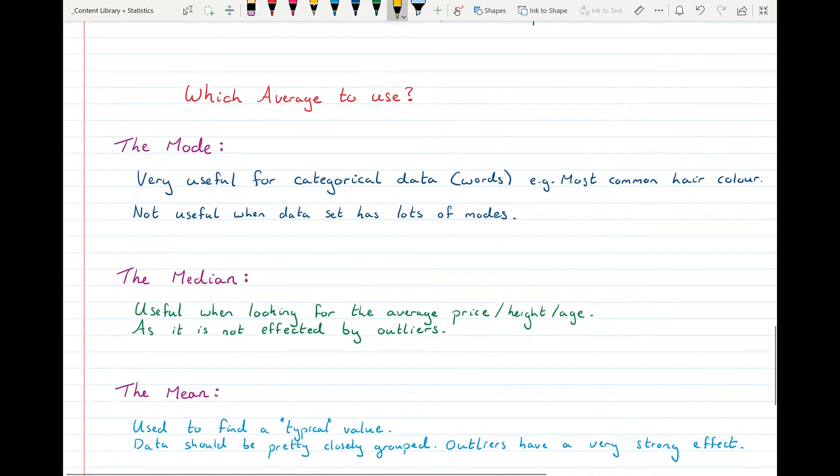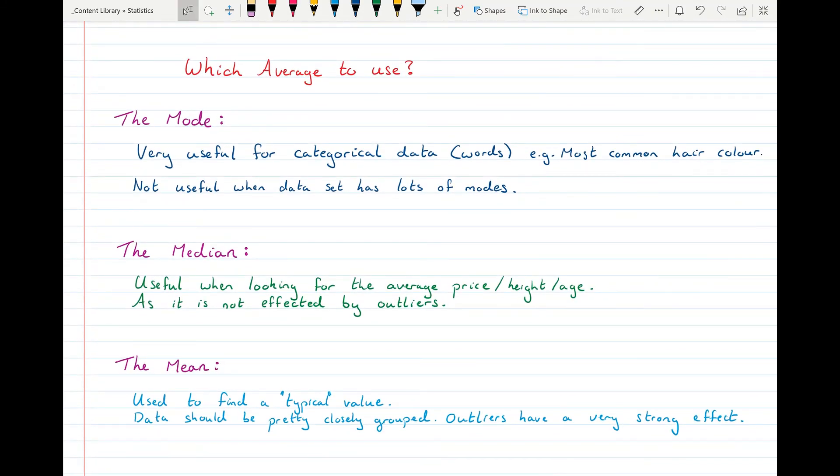And deciding which one to use then. Well, the mode is the most useful if you have categorical data, so like words. So if you're collecting a survey and it's like what's the most common hair colour, the mode is a good one to pick out. It's not very useful when data has lots of modes. So like we were saying previously, where if you have 1, 2, 3, 4, 5, 6, they're all the mode because they all appear once. So that doesn't really tell us anything about the centre of the data.